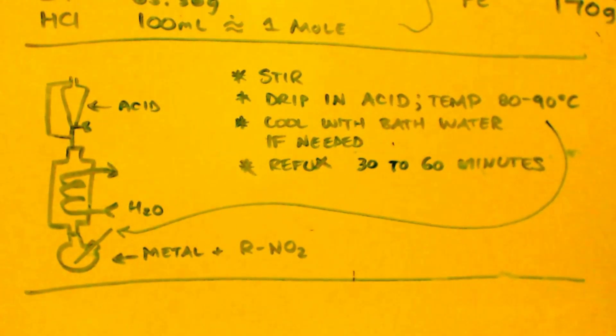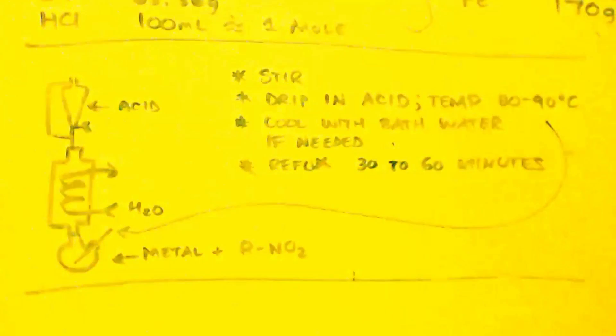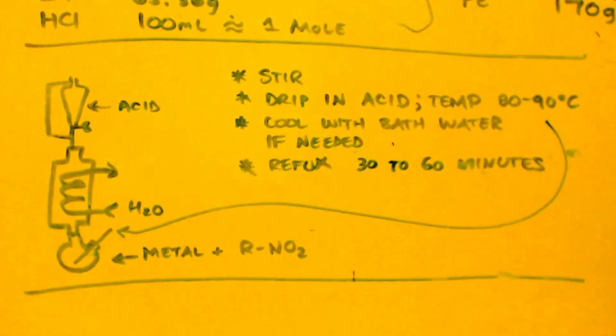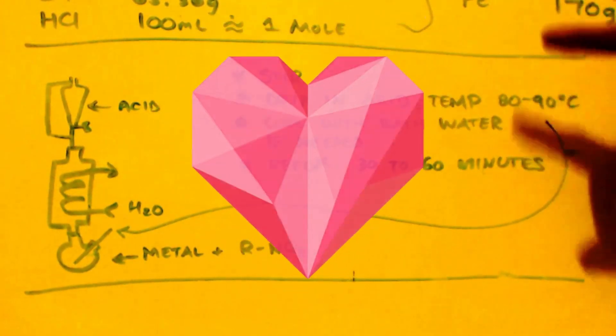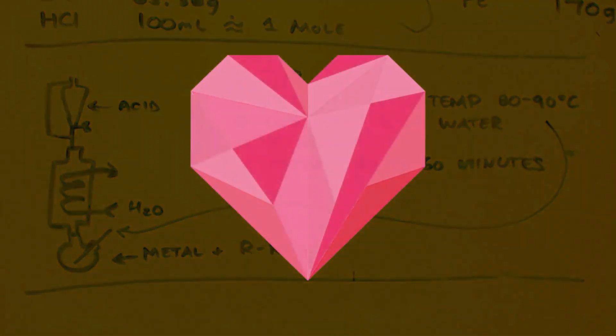And when you're done dripping it in, you take off your equalizing funnel up here. You take it off. And you just start refluxing. Reflux it 30 to 60 minutes. I would say 30. But since I've never done the reaction before, it might be 60. I wouldn't do it more than 60. That's for sure. And that's it. You're done. Now you have your methyl amine hydrochloride. The only problem is you got all this salt. All these salts in there too.